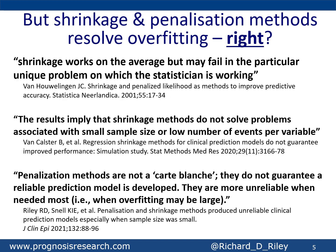You may have heard of shrinkage and penalisation methods such as the lasso, elastic net, and ridge regression, and you may think: don't they resolve overfitting, don't they deal with small sample sizes? Well, this isn't true. Here are some quotes from three key papers: 'Shrinkage works on the average but may fail in a particular unique problem.' 'The results imply that shrinkage methods do not solve problems associated with small sample size.' 'Penalisation methods are not a carte blanche — they do not guarantee a reliable prediction model and are more unreliable when needed most, i.e. when overfitting may be large.' So these are important methods, but only in the context of when the sample size is right.